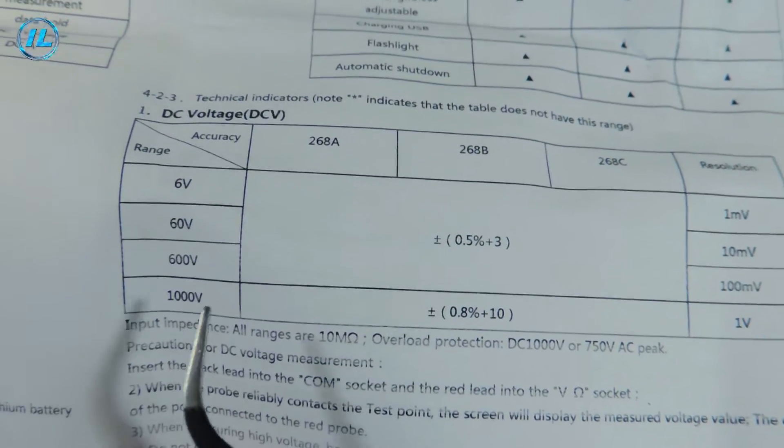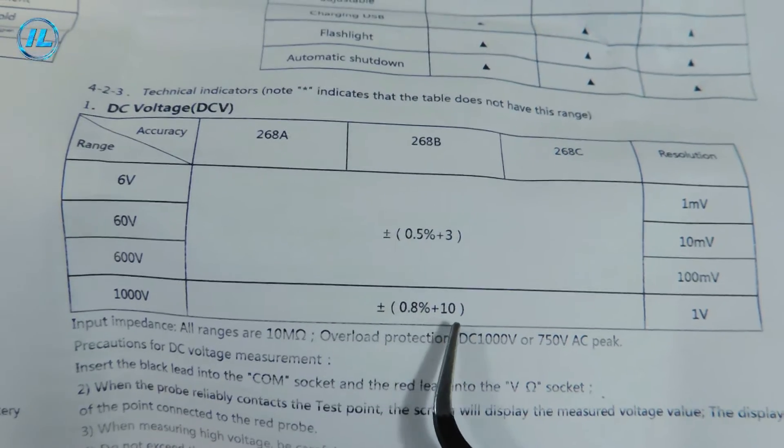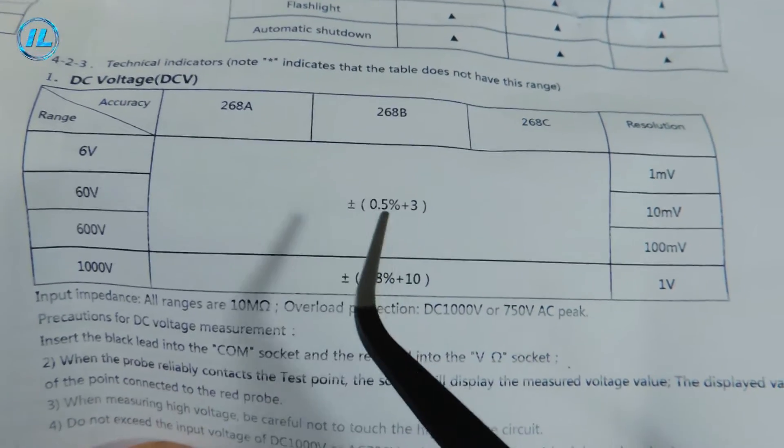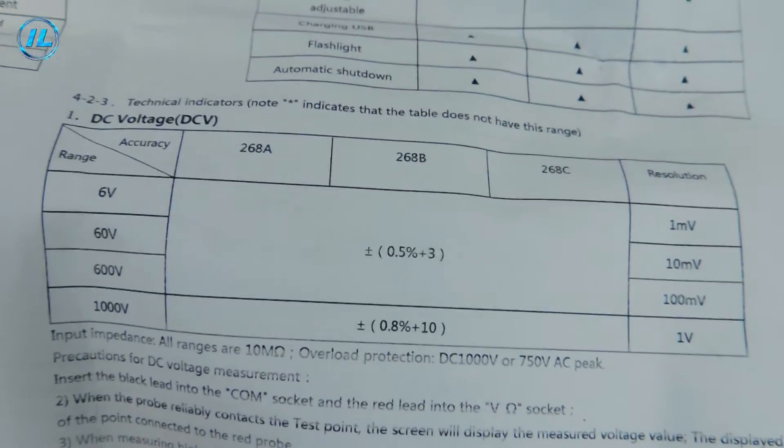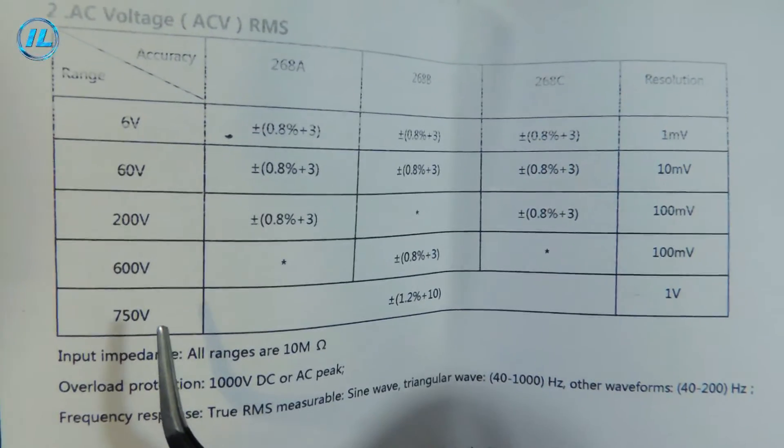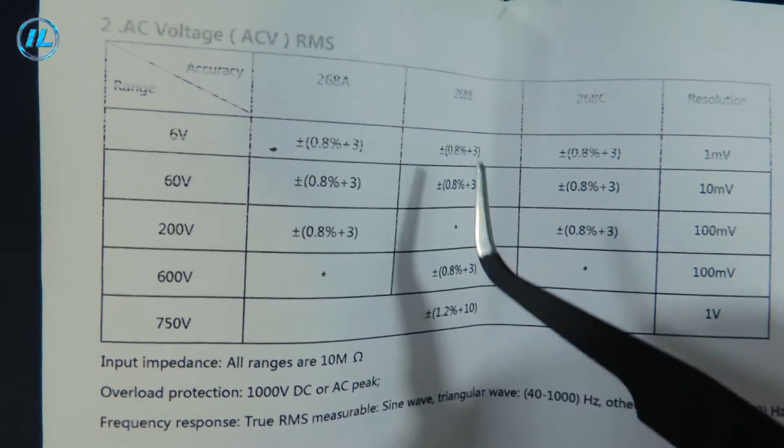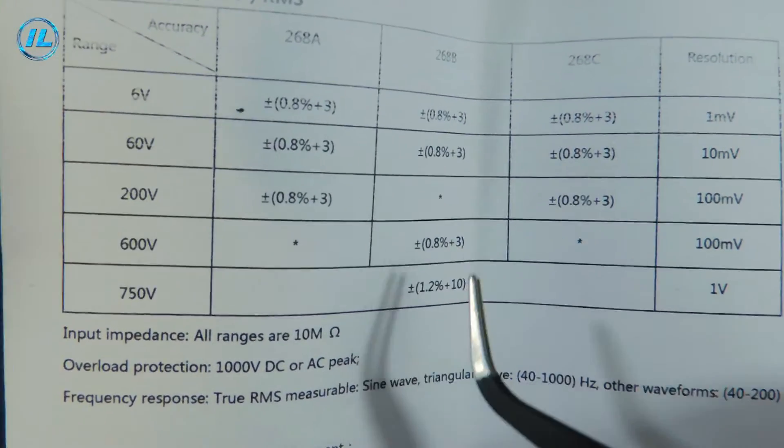Measurement of DC voltage up to 1000V, the margin of error is 0.8%. In the main range, up to 600 volts, 0.5%. These are very good indicators. The next sheet, measurement of AC voltage up to 750 volts. The margin of error is 1.2%. In the main range, the error is 0.8%.